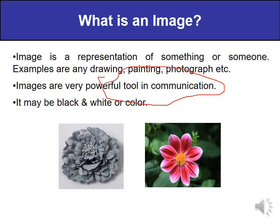Images may be of two types: black and white, or colored. Here you can see two images of a flower — this is a black and white image and this is a color image. How black and white images are processed, how color images are processed, and how to calculate the memory requirement — we will study in the coming classes.